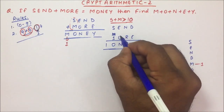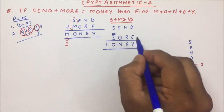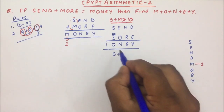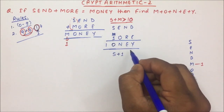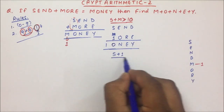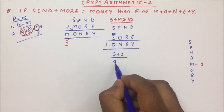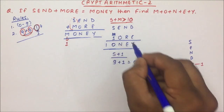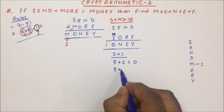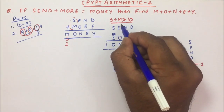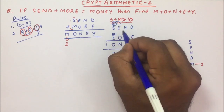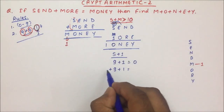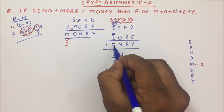Now we will try to calculate the value of O and S. S plus 1 — the addition of S plus 1 has to be either 10 or greater than 10, then only it will give a carry-forward. If S is 9, then 9 plus 1 is 10, which gives a carry-forward. There may also be a possibility of one carry-forward coming from the second column — in that case, if S is 9 and there is a carry of 2, then 9 plus 2 is 11, giving O equals 1.